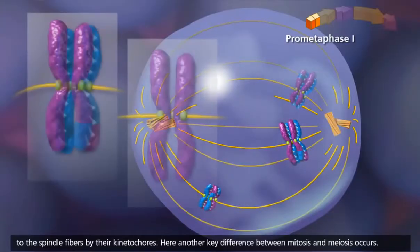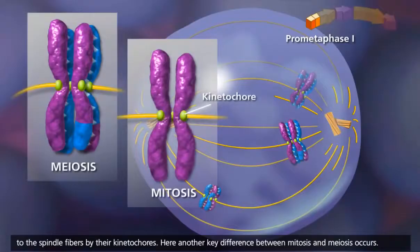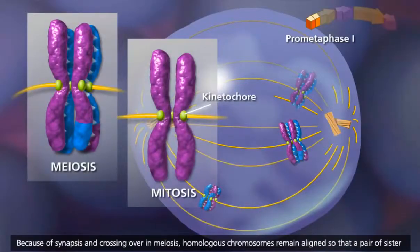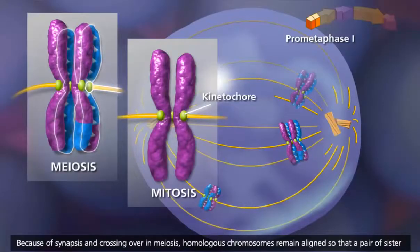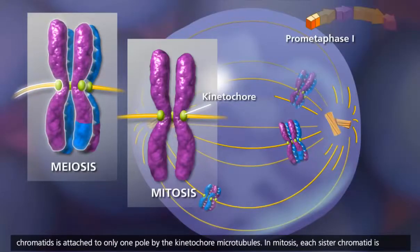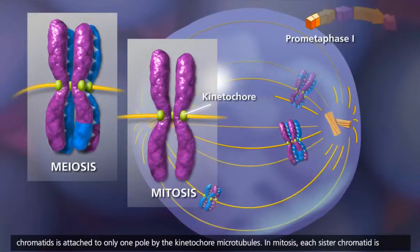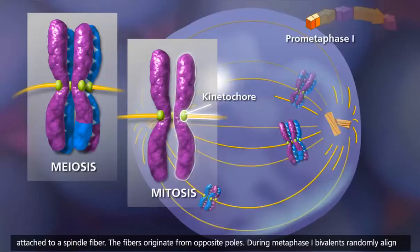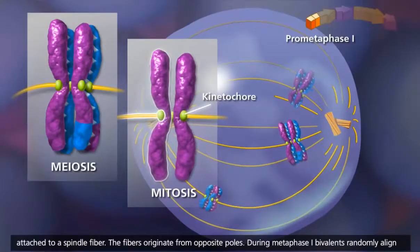Here, another key difference between mitosis and meiosis occurs. Because of synapsis and crossing over in meiosis, homologous chromosomes remain aligned, so that a pair of sister chromatids is attached to only one pole by the kinetochore microtubules. In mitosis, each sister chromatid is attached to a spindle fiber, and the fibers originate from opposite poles.